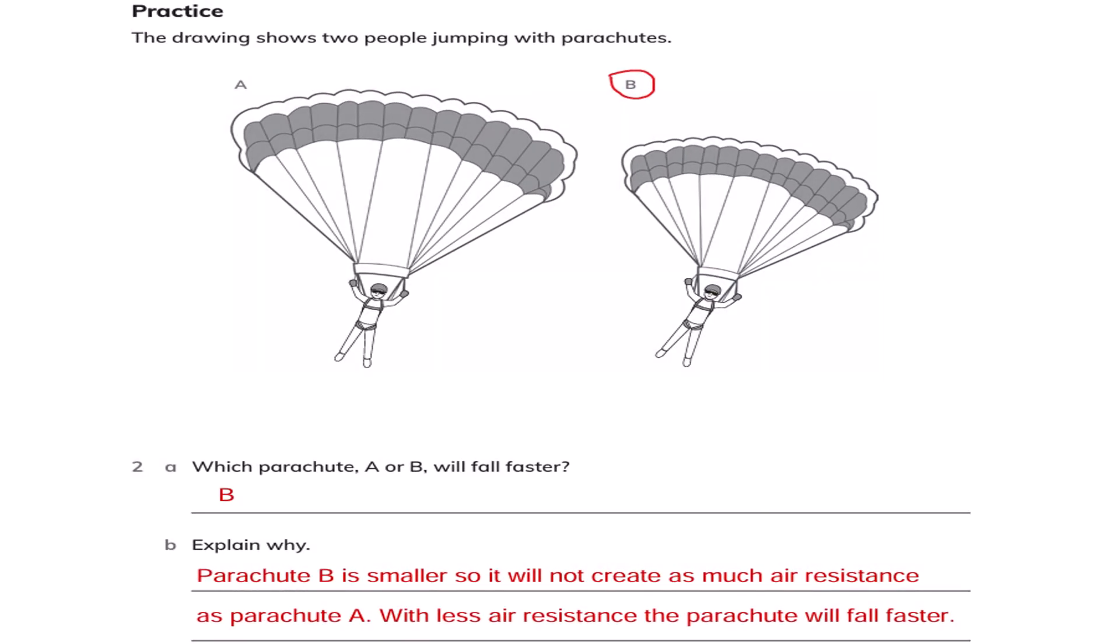The drawing shows two people jumping with parachutes A and B. Which parachute, A or B, will fall faster? Parachute B. Explain why. Parachute B is smaller, so it will not create as much air resistance as parachute A. With less air resistance, the parachute will fall faster.